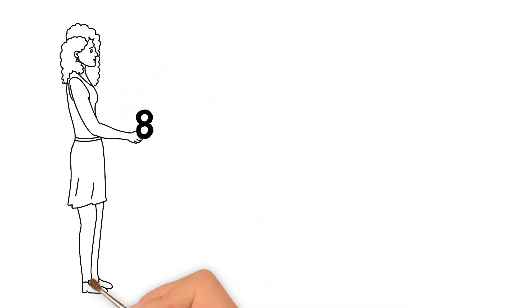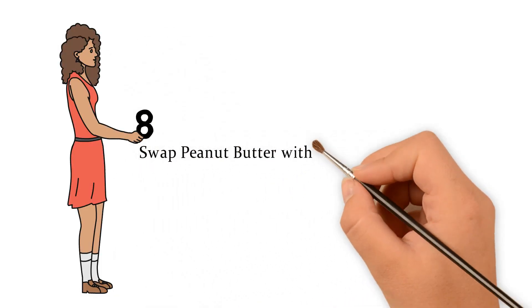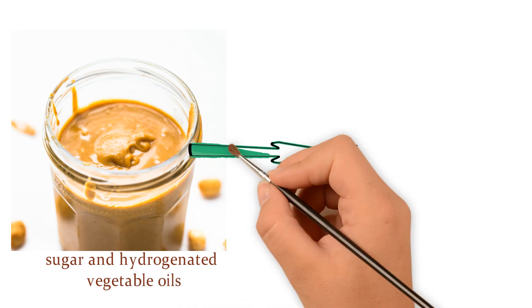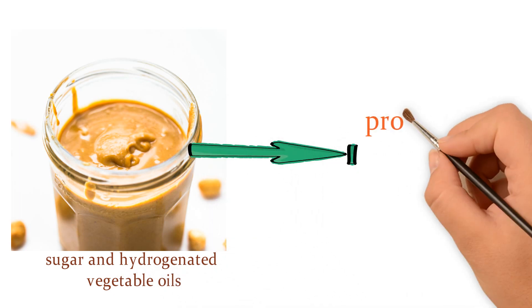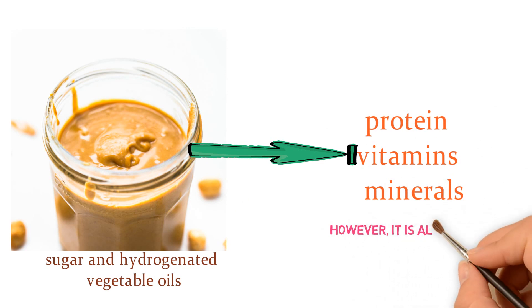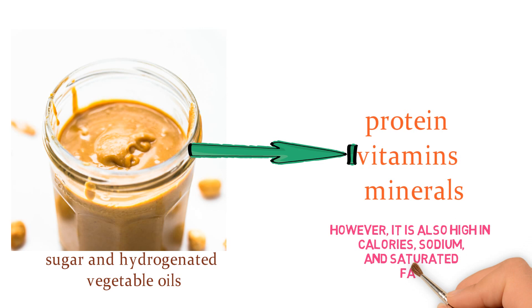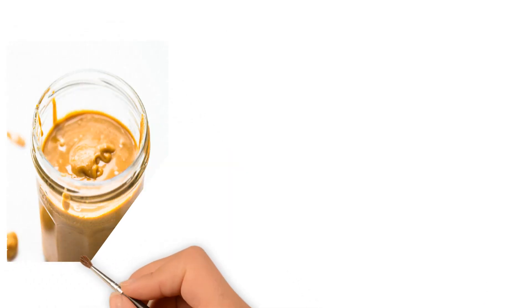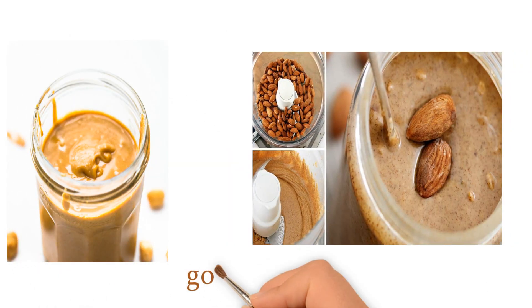8. Swap Peanut Butter with Unprocessed Almond Butter. Peanut butter contains added sugar and hydrogenated vegetable oils. It includes a considerable amount of protein, vitamins, and minerals. However, it is also high in calories, sodium, and saturated fat. Swapping peanut butter for unprocessed almond butter can be a good idea.